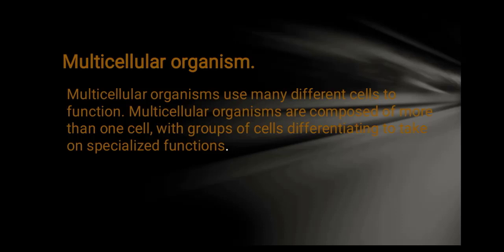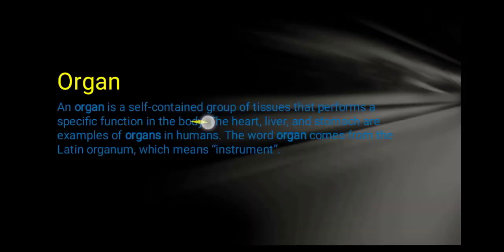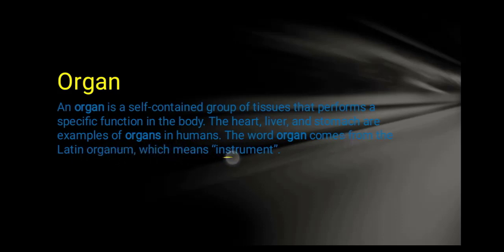Today we are going to discuss organ and organ system. An organ is a self-contained group of tissue that performs a specific function in the body. The heart, liver, and stomach are examples of organs in humans. The word organ comes from the Latin word meaning instrument. Organs are composed of different types of tissue.